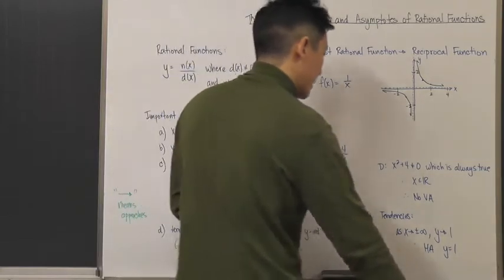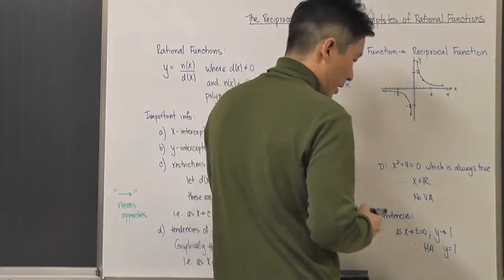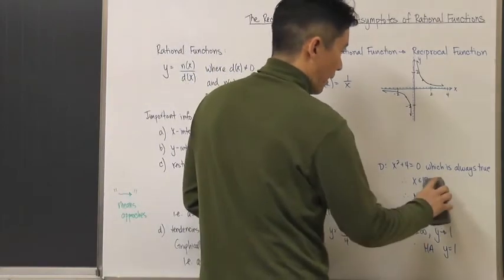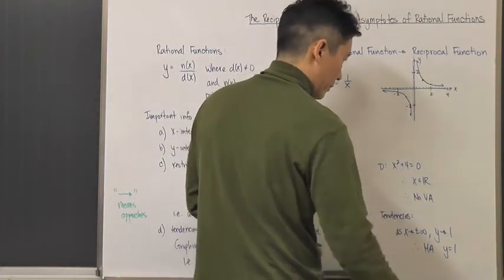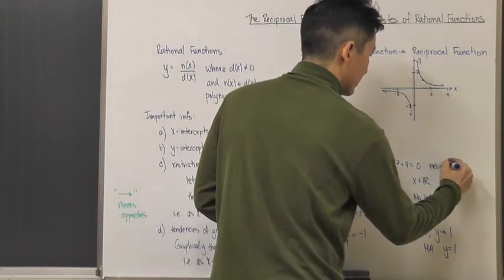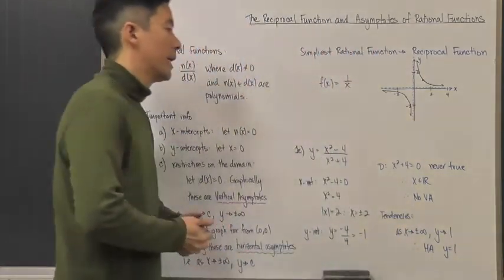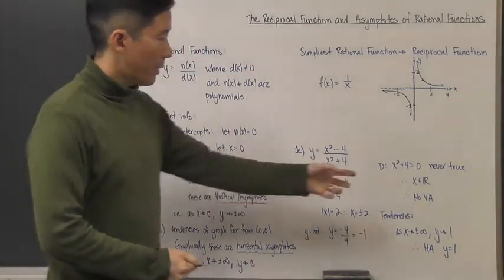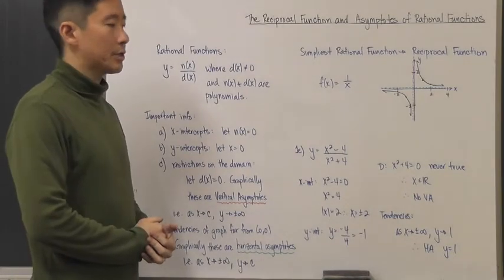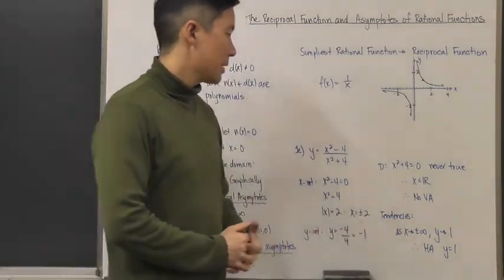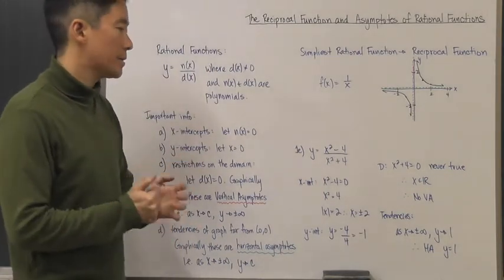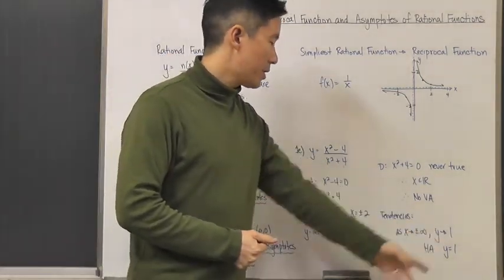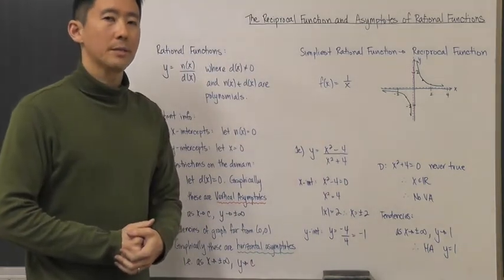For domain restrictions, we let the denominator x² + 4 equal zero. This is never true — x² + 4 is always positive — so there are no restrictions. Therefore the domain is all real numbers and there are no vertical asymptotes. Looking at tendencies: as x approaches plus or minus infinity, y approaches 1, so the horizontal asymptote is y = 1.